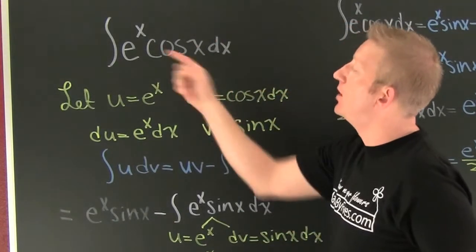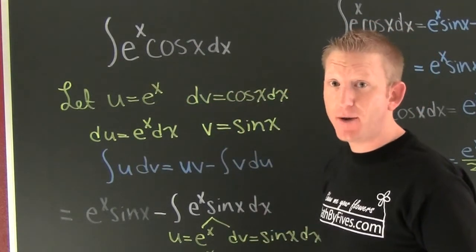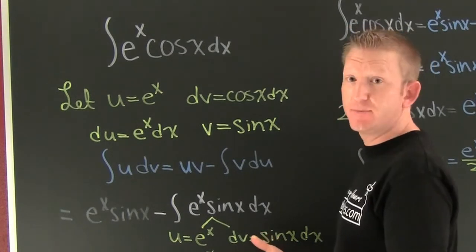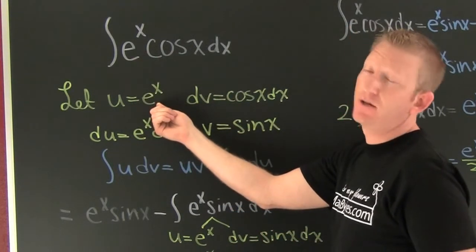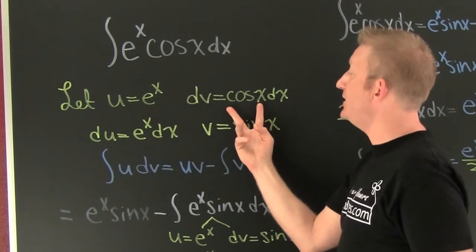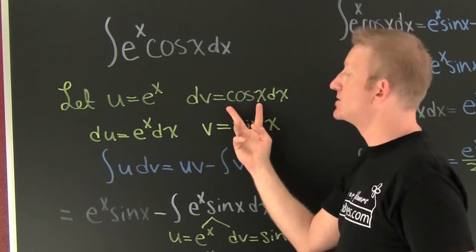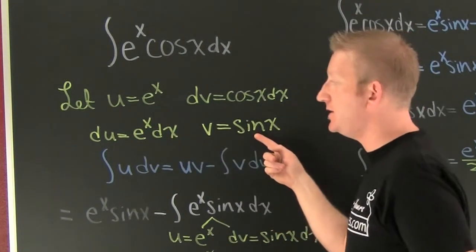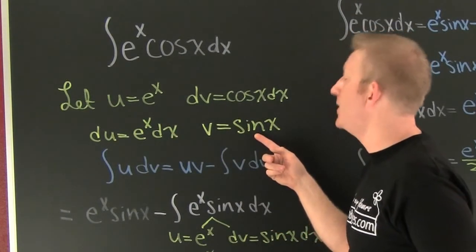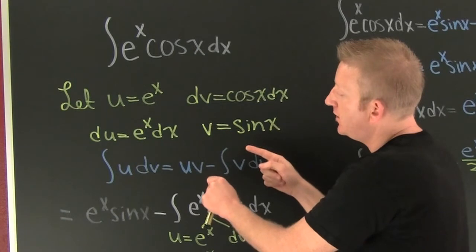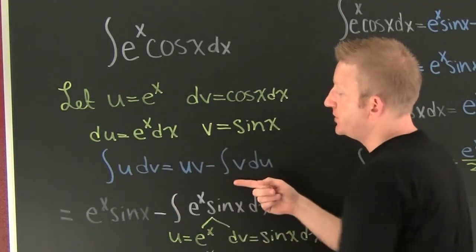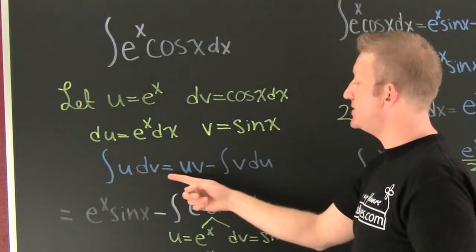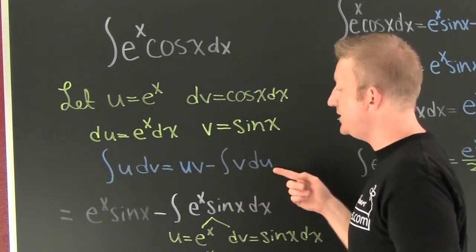What we see here, this isn't a u sub. This is by parts. So we need to break it up into its parts. Here, I'm going to let u be e to the x. That makes dv the cosine of x dx. We're going to find our du and our v because we need this form.